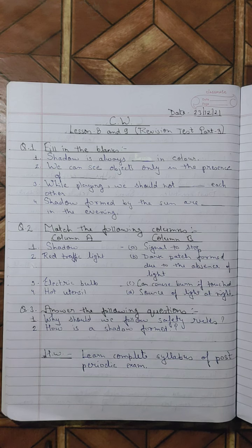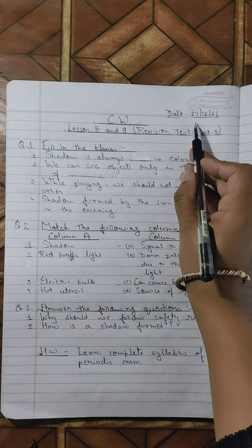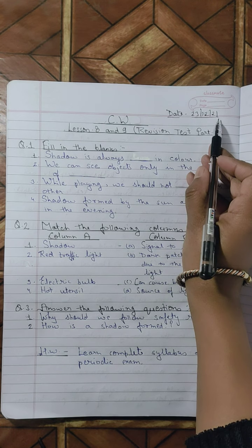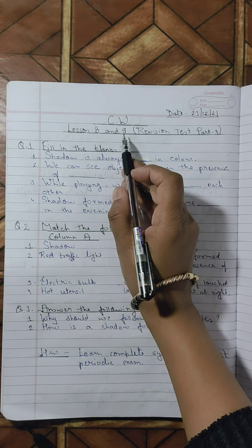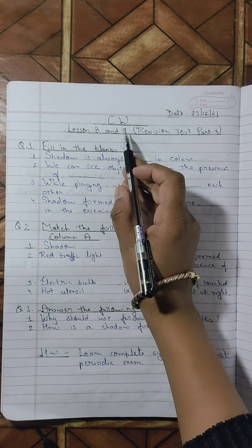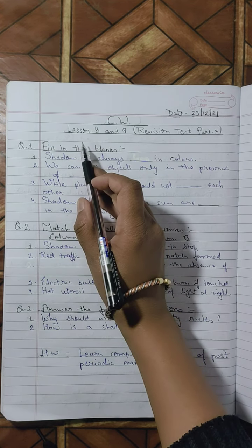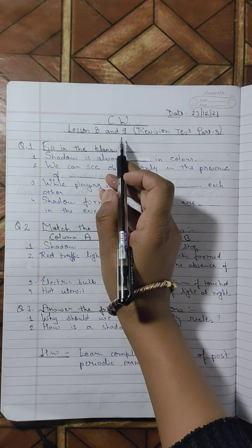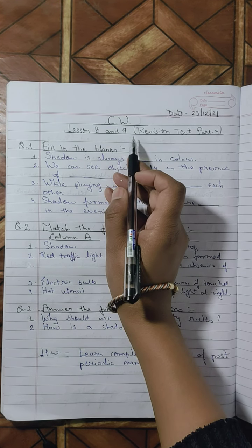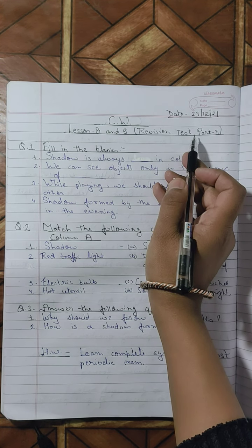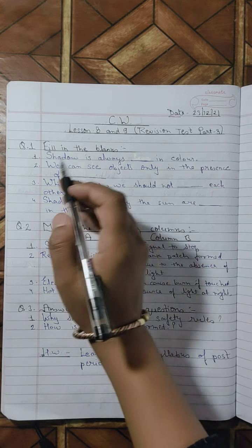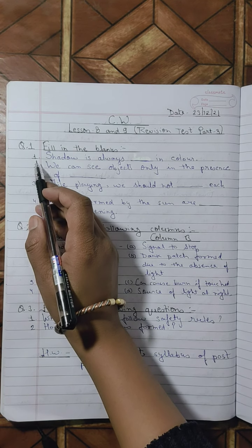Now let's start. First of all, write down the date — today is 23rd December 2021. Underline the date. Then on the next line write 'CW', that is classwork, and underline it. Then write your lesson heading: this is the revision test of lessons 8 and 9. This is division test part 3. Write the headings and underline them.